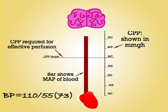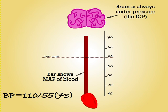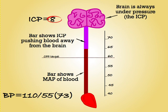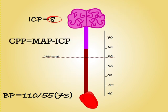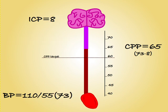However, this is not the whole story. As we saw in the previous animation, the brain itself is always under a certain amount of pressure, known as intracranial pressure, or ICP. This pressure is opposing the MAP and pushing the blood back out of the brain. The cardiovascular system must overcome the ICP to ensure adequate blood flow. We can therefore say that Cerebral Perfusion Pressure is MAP minus ICP. This patient has an ICP of 8, so we can calculate their CPP as 73 minus 8, equaling 65 — easily adequate to effectively perfuse the brain.